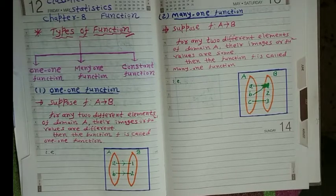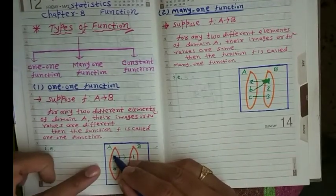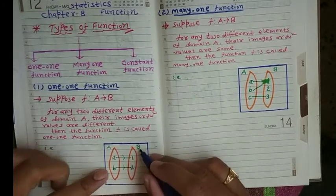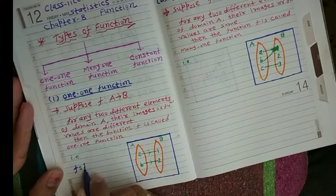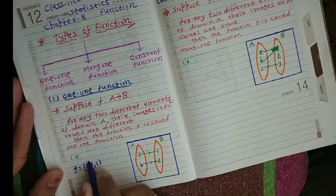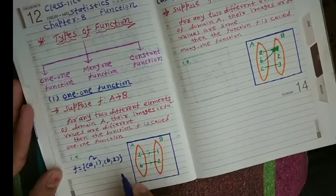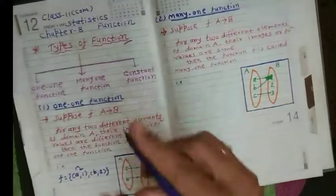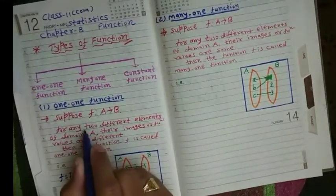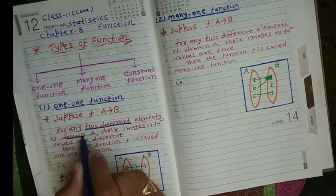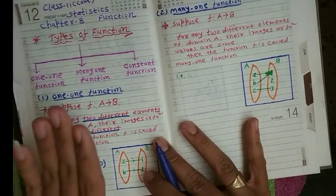Let's explain with an example. Given that A is the domain with elements {a, b} and B is the codomain {1, 2}. We write the function as f = {(a, 1), (b, 2)}, meaning the image of a is 1 and image of b is 2. Taking two different elements a and b from the domain gives different images, so this type of function is called a one-one function.